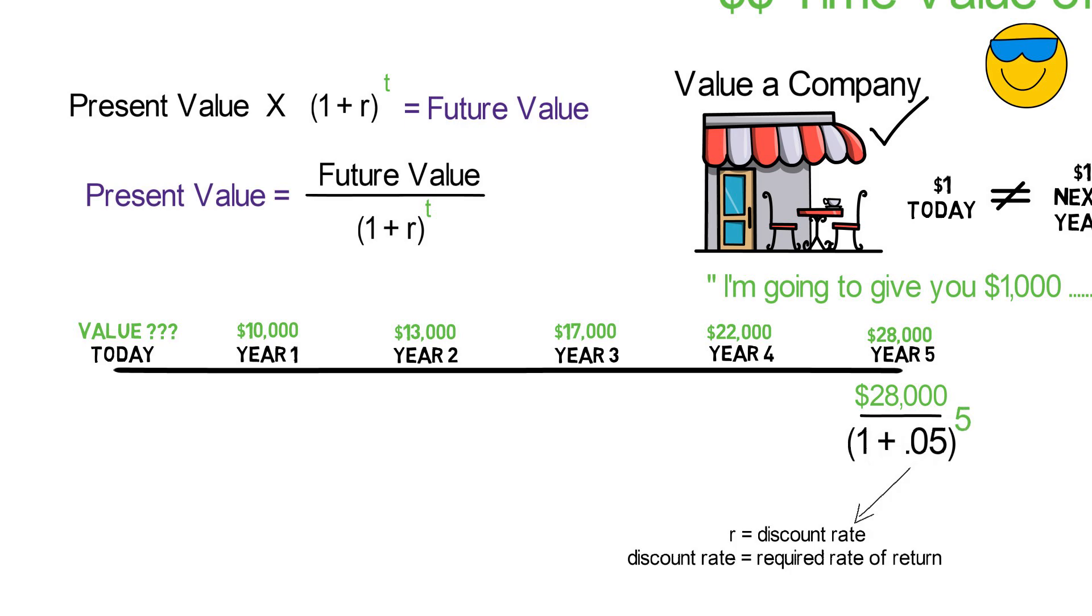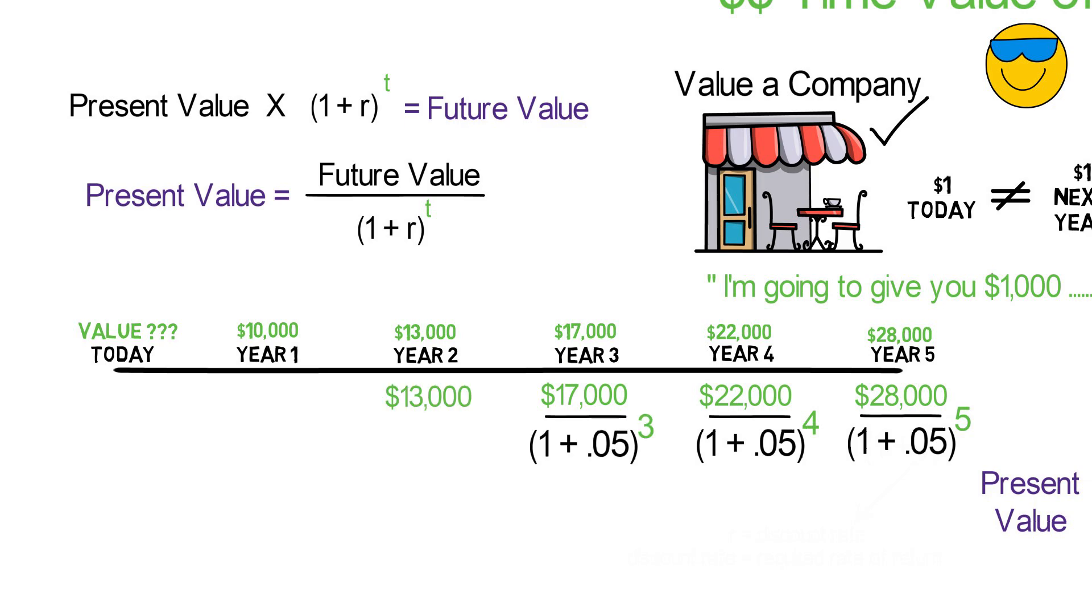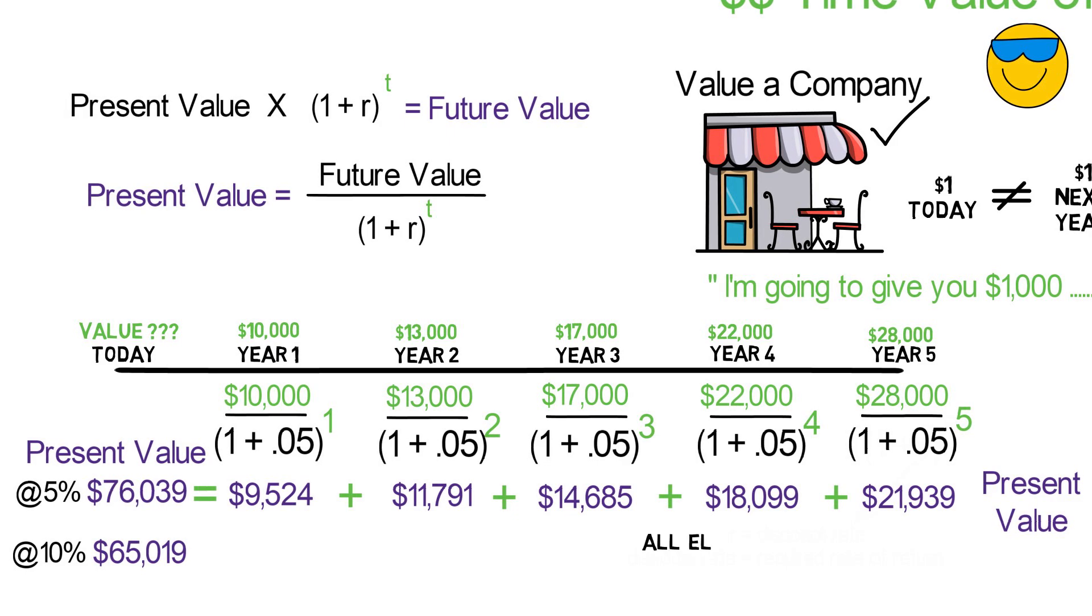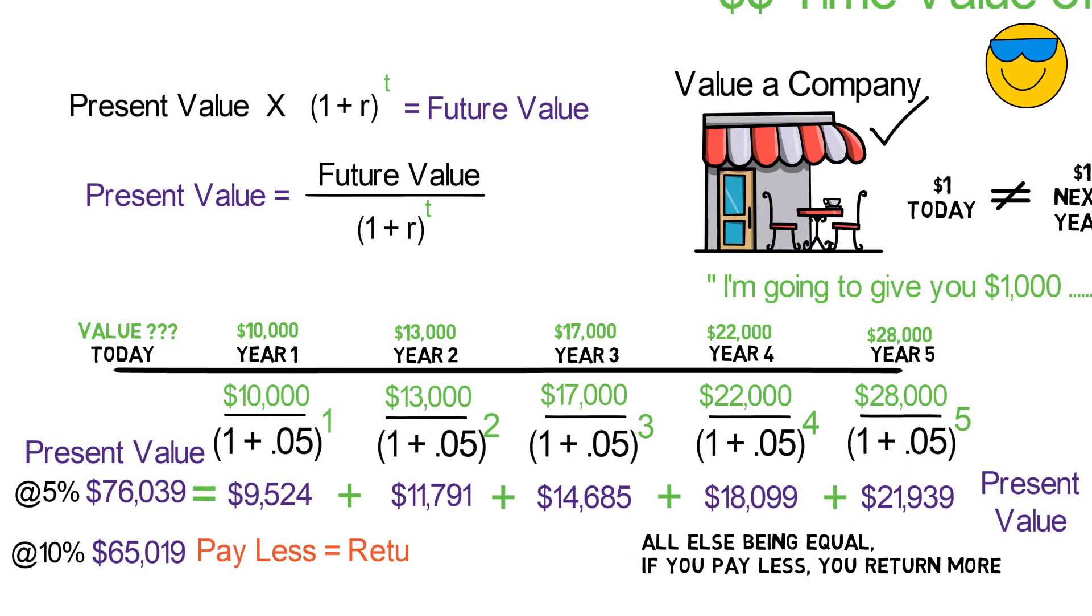If we want a 10% return, well, we should use that as our discount rate. And this formula would give us what we should pay for the business to get a 10% return. So, if we finish our math, here is each of the formulas, and here is what each year's cash flow is worth today. So, now all we have to do is add each of these up and get the total value of the business today. And that turns out to be $76,039 at a 5% return, or to say it more accurately, using a 5% discount rate. Now, if we want a 10% return, the value falls to $65,019. And this number being lower makes sense. If you want to return more, well, you want to pay less today. Well, if you paid less than this $65,000, well, your return would be greater than the 10% discount rate we use to calculate the present value.